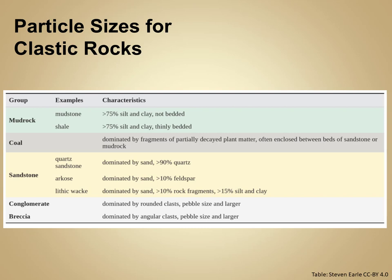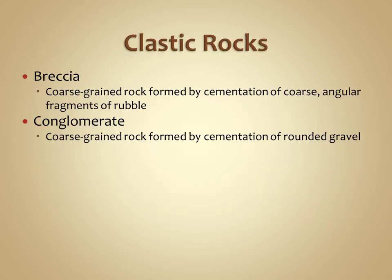We distinguish the various types of clastic rocks based upon their particle size. Starting with our largest or most coarse-grained size — gravel — there are two types of clastic rocks: breccia and conglomerate.